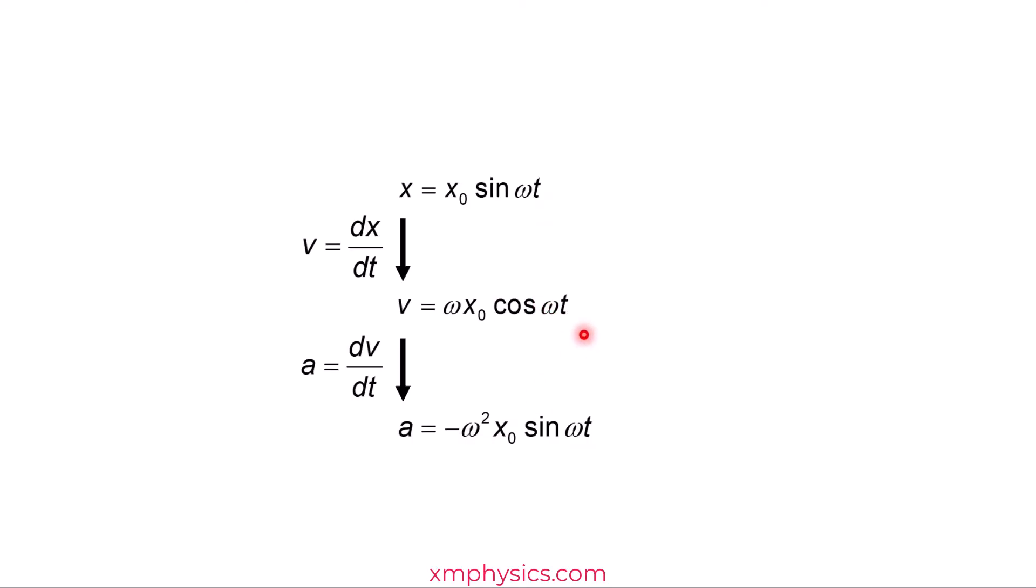So with just two simple steps, we have derived the formula for velocity and acceleration of a simple harmonic motion. And not only that, now remember X naught is the amplitude. Because sine omega T varies between negative 1 and 1. So X varies between negative X naught and X naught. That's why X naught is the amplitude. Now look at this thing here. Cosine omega T also varies between negative 1 and 1, which means V varies between negative omega X naught and omega X naught, which means omega X naught is the maximum speed of the SHM.